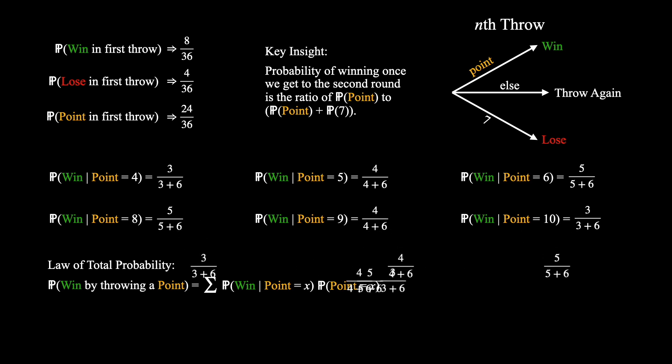Working through the summation is quite a mechanical process, so I'm going to plug in all these values for you. Crunching the numbers, we get that the probability of winning by throwing a point is 0.27071.